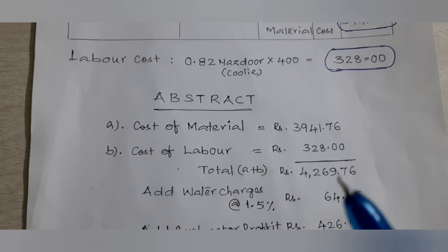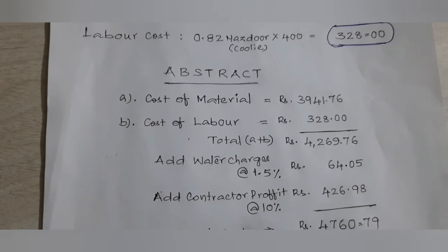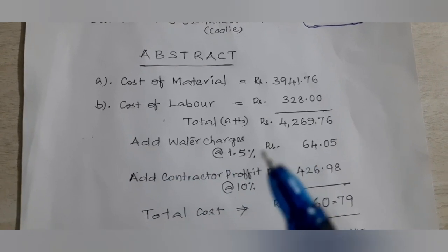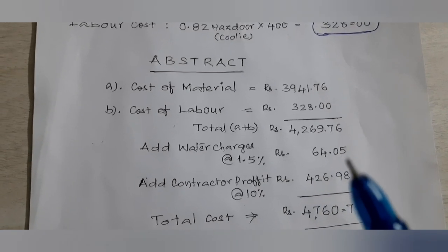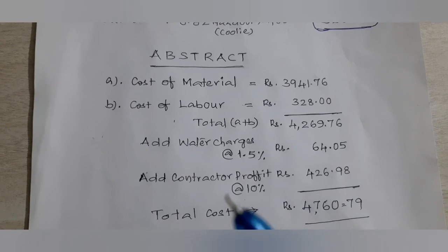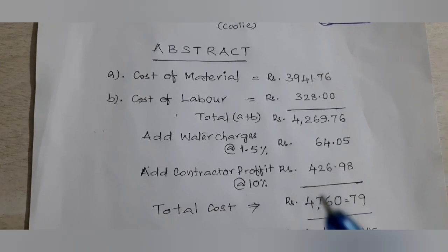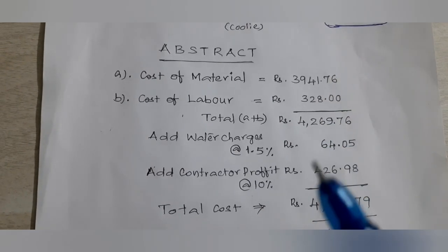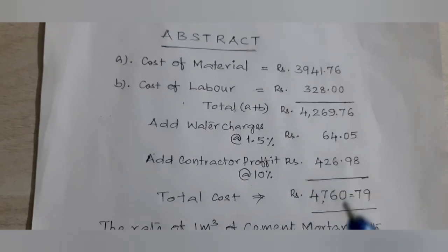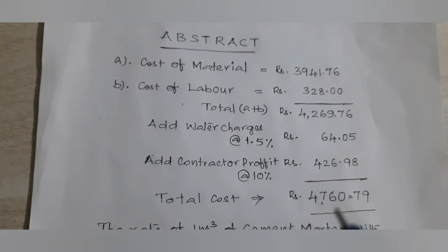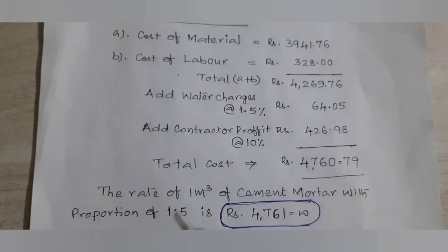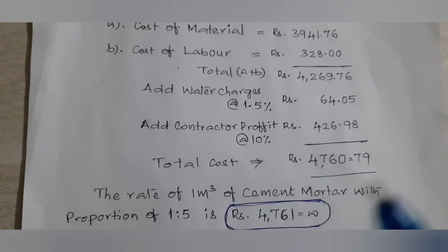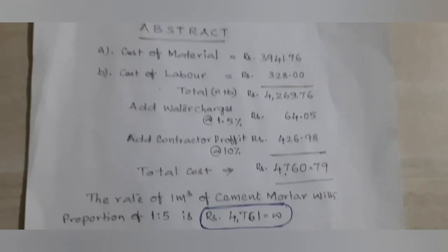Total cost by adding labor and material is 4269.76 rupees. For water and other expenses, we add 1.5 percent, which equals 64 rupees 5 paisa. We also add contractor profit at 10 percent of material and labor cost, which is 426 rupees 98 paisa. Adding all these — material, labor, water charges, and contractor profit — the total cost for 1 cubic meter of cement mortar at 1:5 ratio is 4761 rupees.